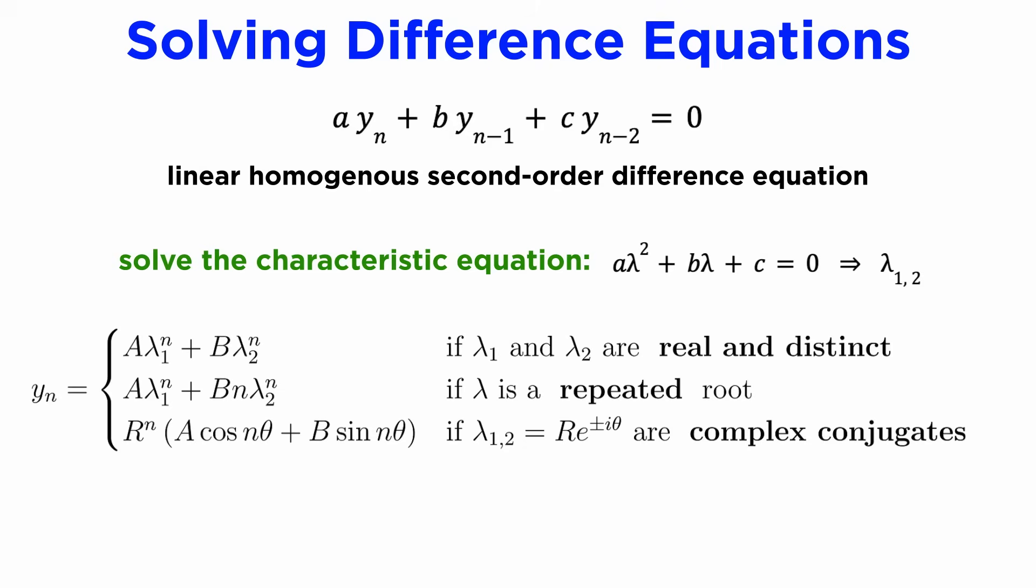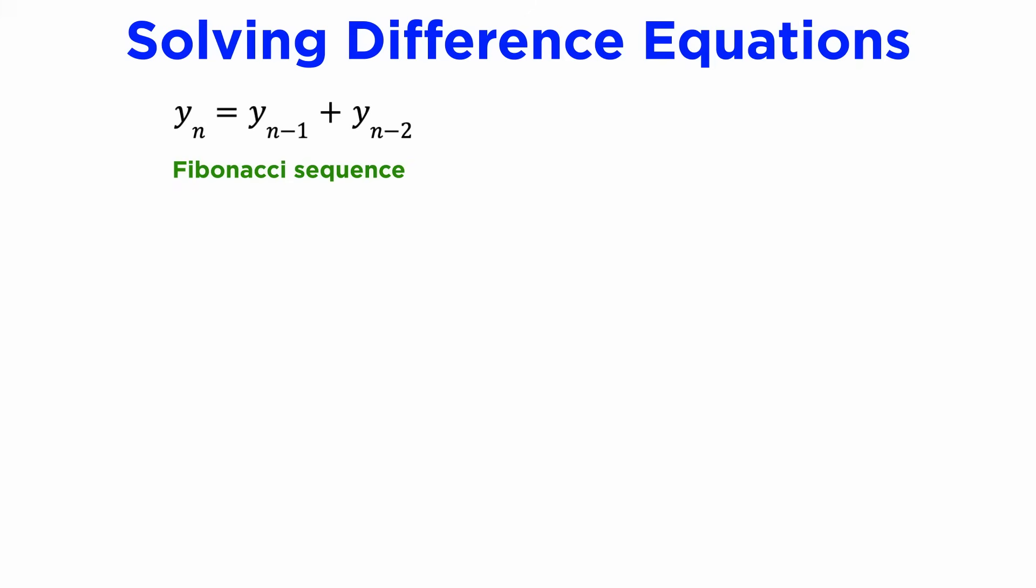For differential equations, our ansatz solution was the exponential e to the lambda x, but for difference equations, we use the power law lambda to the n, and this produces three different cases for our complementary solution, depending on whether we have real, repeated, or complex roots. For the real roots case, we get simple power law solutions. For repeated roots, we multiply by n to get a second linearly independent solution, and for complex conjugate roots, we write our roots in the polar form lambda equals r times e to the plus or minus i theta, where r is the magnitude and theta is the argument of lambda.